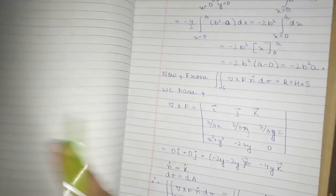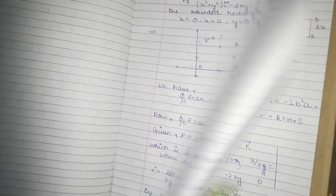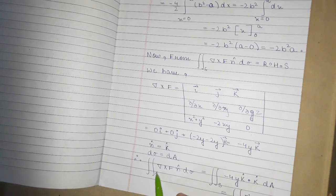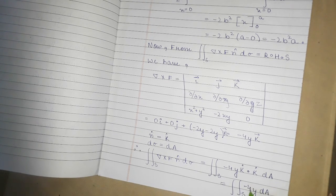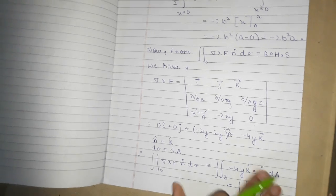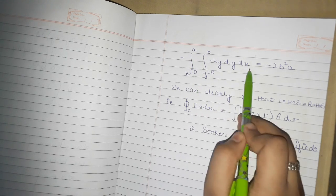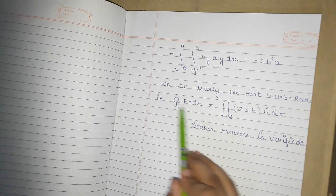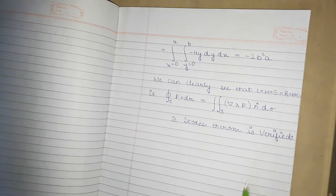Since the surface is a flat 2D plane, n cap equals k cap and dσ equals dA. So the surface integral becomes the double integral of −4y dA, with limits y from 0 to b and x from 0 to a. Solving this gives −2b²a. We can clearly see that LHS equals RHS, that is both equal −2ab², and Stokes theorem is verified.